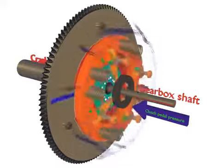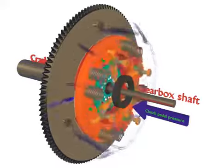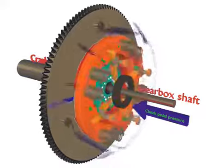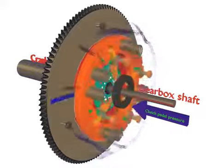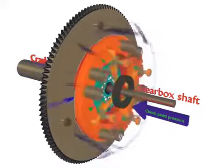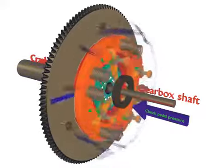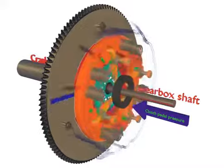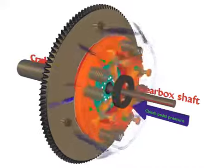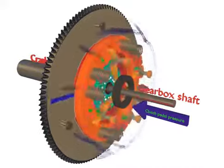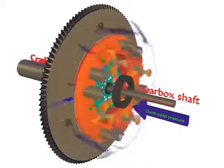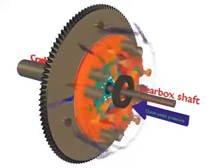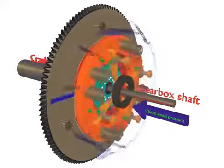This causes the pressure plate to move away from the clutch plate and flywheel. This results in allowing the flywheel and pressure plate to turn without transmitting power to the clutch plate and clutch shaft. Thus the clutch operation gets disengaged.